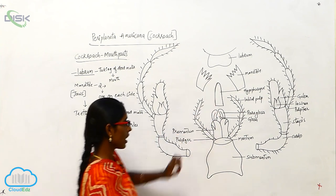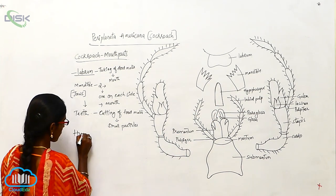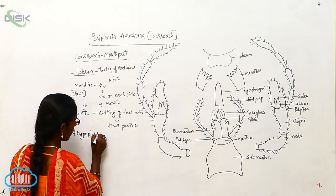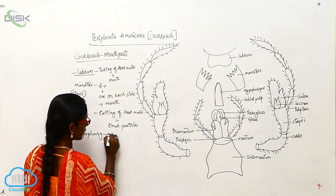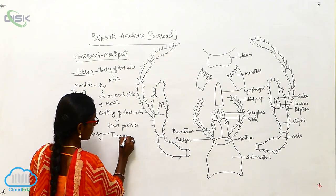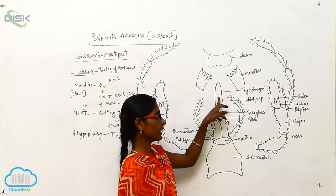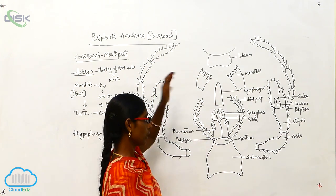The hypopharynx acts like the tongue. It is involved in taking food material into the mouth.